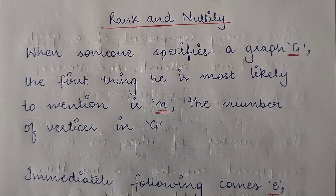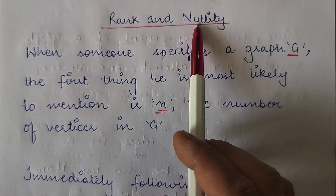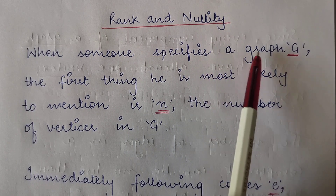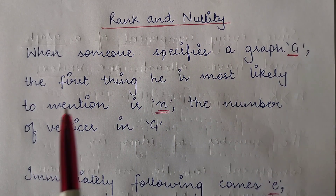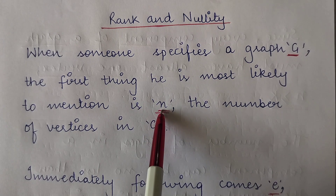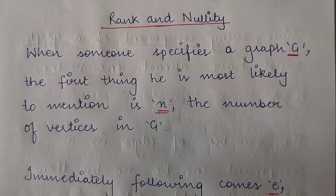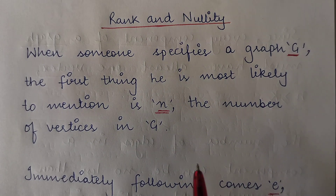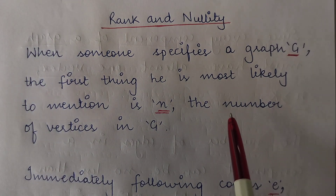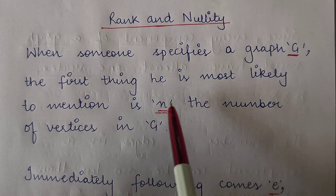Hi everyone, today we are going to study the rank and nullity of a graph. When someone specifies a graph denoted by G, the first thing that he is most likely to mention is N, that is the number of vertices in the graph G. So whenever we hear the term graph, the first term that comes to mind is the number of vertices, which is usually denoted by small n.